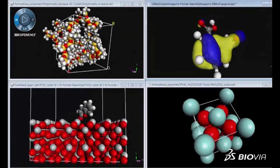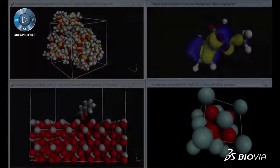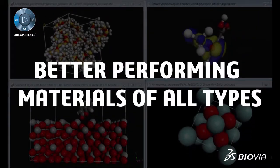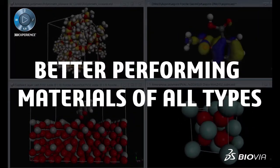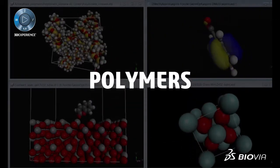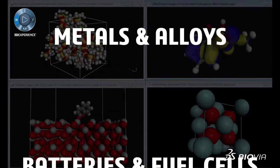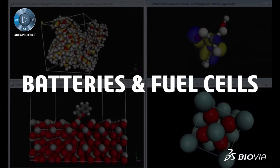Using Materials Studio, researchers in many industries are engineering better performing materials of all types, including catalysts, polymers, composites, metals, alloys, batteries, fuel cells, and more.